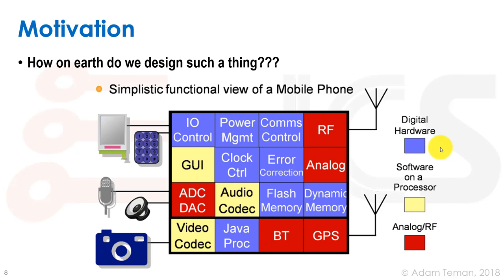Consider a theoretical system-on-a-chip inside a cell phone — a block diagram showing a video codec, Bluetooth, GPS with RF, another RF block for communication, analog blocks, clocking, audio for microphone and speaker, screen, keyboard, power management, and more. All these different things can be integrated on one chip, and that's really complicated. So how on earth should we design such a thing?